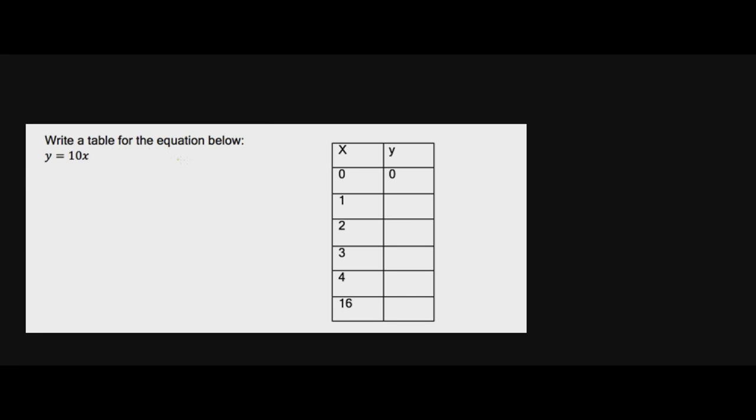Write a table for the equation below. Well, we're going to start off at zero for now, and this will change later. Okay, well, this is 10x. Well, if we know the purpose of multiplying, well, we know that when we multiply by 10, that means that we're going to always be adding by a constant rate of 10.